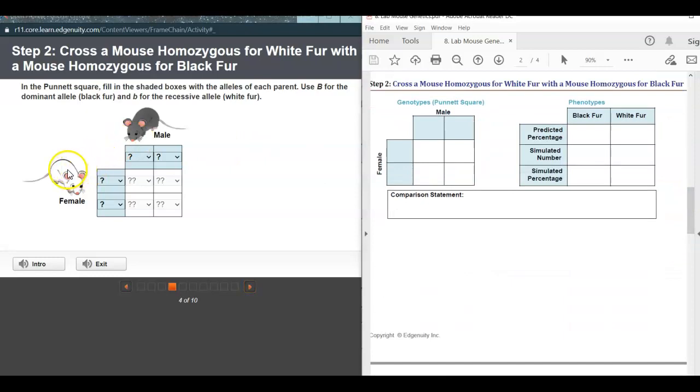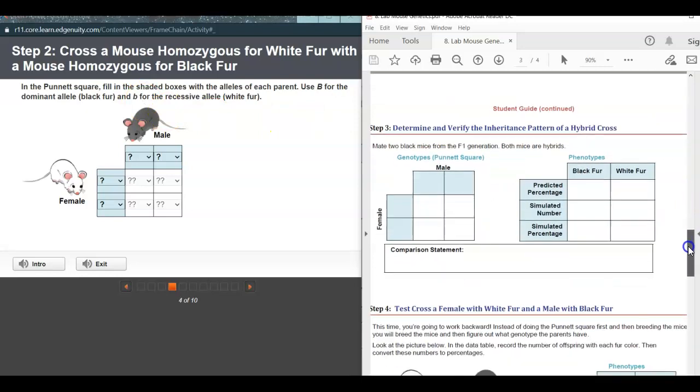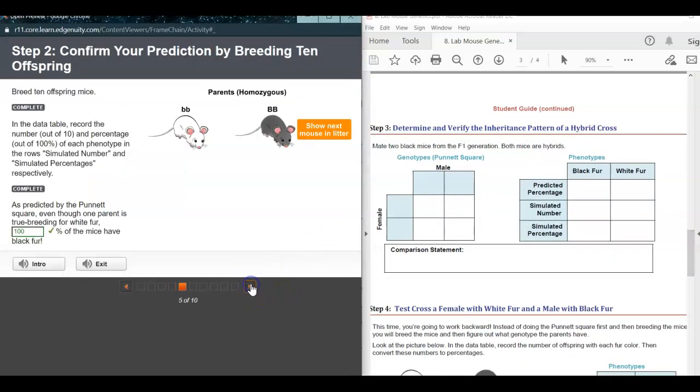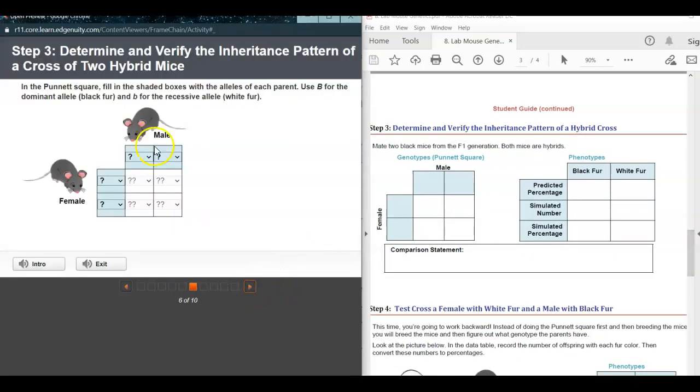We have a situation here where we have a white female and a black fur male. Then we'll go on to the last one. These are going to be heterozygous. When it says they're hybrid, that means they're heterozygous.